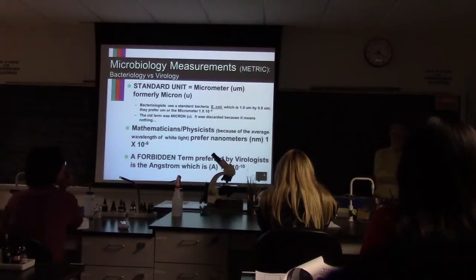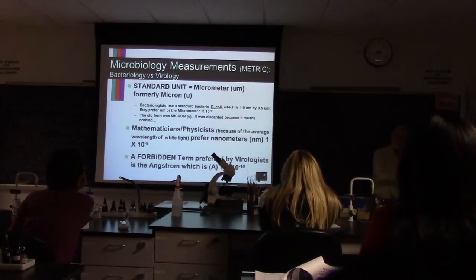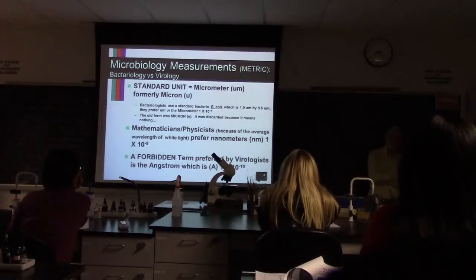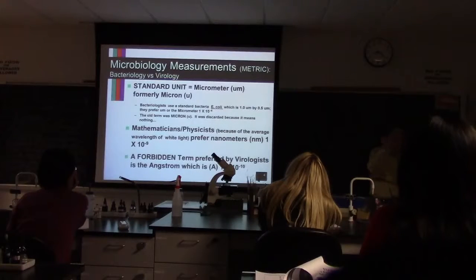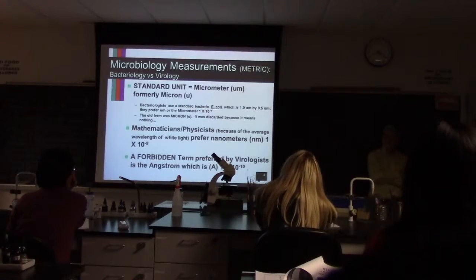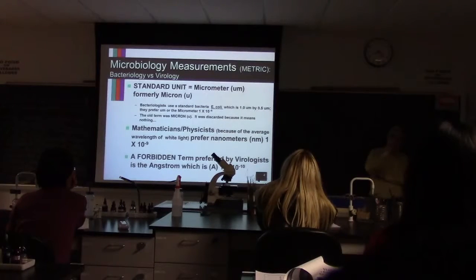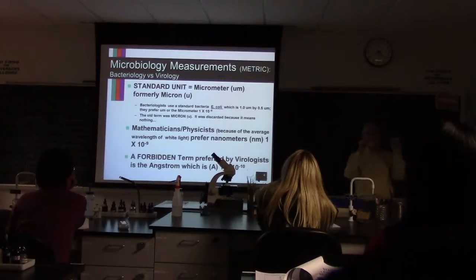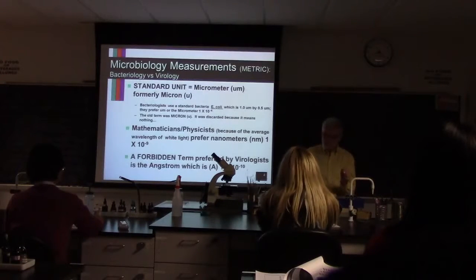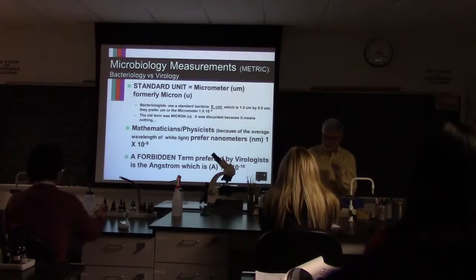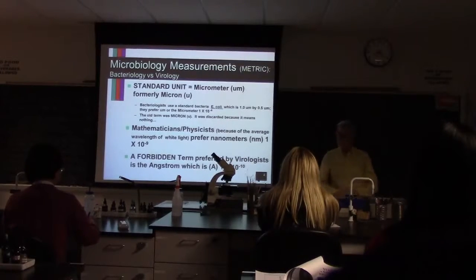When a virologist publishes a paper with their new virus, they put the measurements in angstroms and submit it to the publisher. The publisher whites it out and changes it to nanometers. The virologist whites it out and puts it back in angstroms. And it is published in nanometers, but in parentheses they put angstroms — even though angstroms are absolutely forbidden.